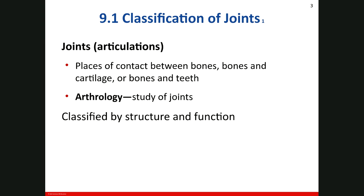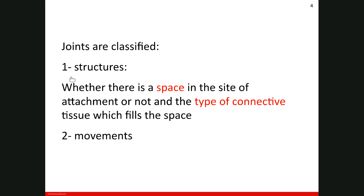Bones are said to articulate with each other at a joint. The scientific study of a joint is called arthrology. Joints are classified by their structure and also their function. Based on their structure, we can talk about whether there is a space at the site of attachment or not and what type of connective tissue can fill this space. If we want to classify the joints by their movement, we talk about the degree of movement in each of the joints.